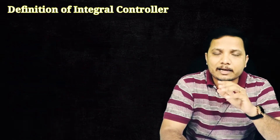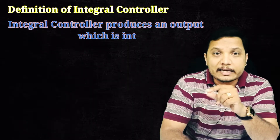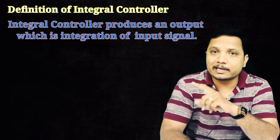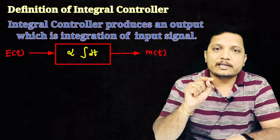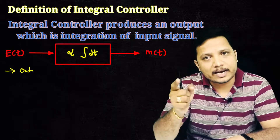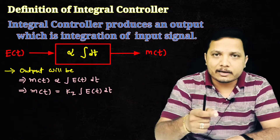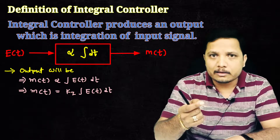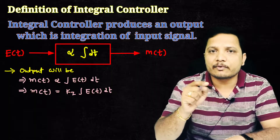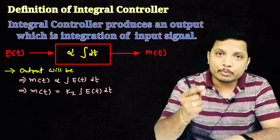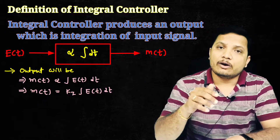Let us begin with the definition of the integral controller. The output of an integral controller is the integration of the input given to the controller. So if we have an integral controller and give it an input signal e(t), then the output m(t) is directly proportional to the integration of e(t), giving us: m(t) = Ki multiplied by the integral of e(t).